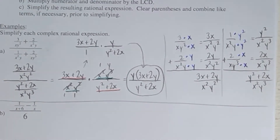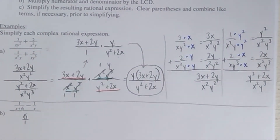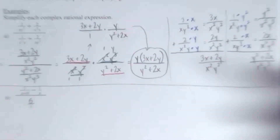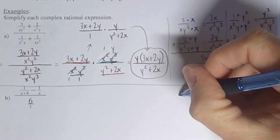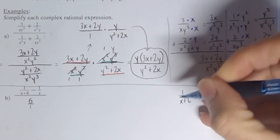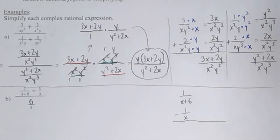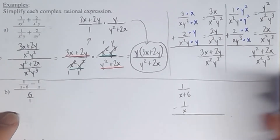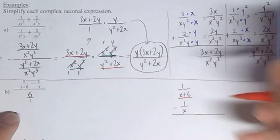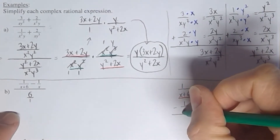Let's do problem B. Notice that the bottom here — if you say 6 over 1, which is the same thing as 6 — that is already a single fraction, so that's already done. All you've got to do is work on the top part: 1 over x plus 6, minus 1 over x. Now remember, when you have more than one term in any of your denominators, the way you figure out the LCD is you have to factor your denominators. This thing is prime, so it's a single red one. When you have a single term as one of your denominators, that's a green one.